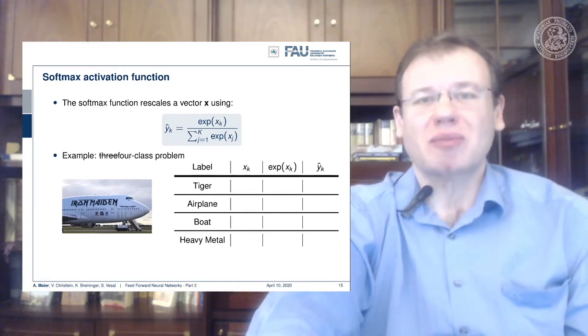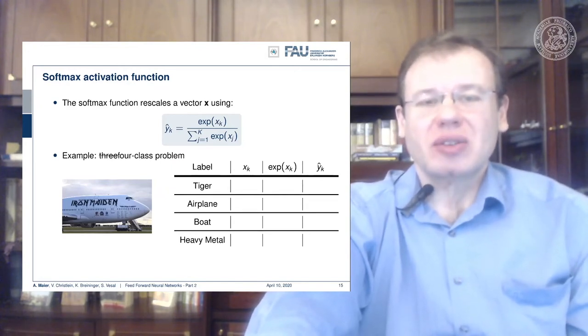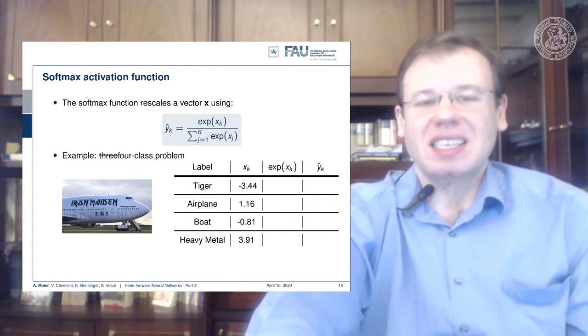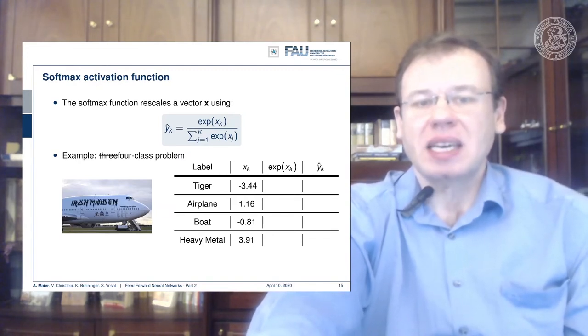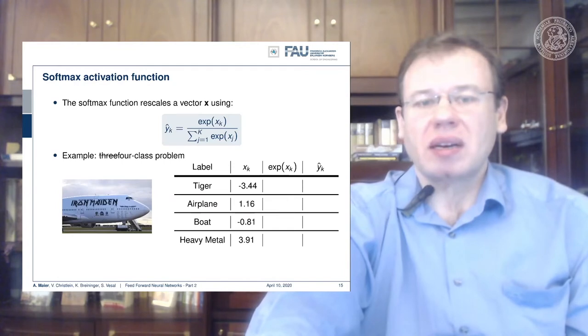It's a four-class problem. So you introduce labels for this four-class problem and then you have some arbitrary input shown in the column x_k, scaled from minus 3.44 to 3.91.